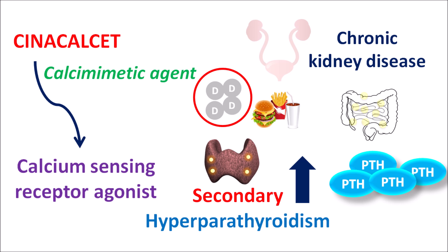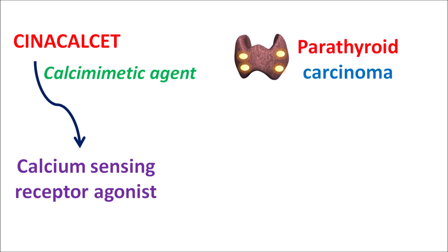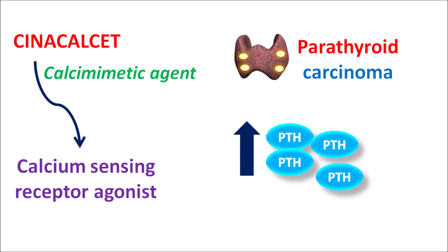In such conditions, the raised levels of parathyroid hormone can produce various systemic complications and should be thoroughly controlled. Cinacalcet can be used to control raised PTH levels. Apart from this indication, Cinacalcet can also be used in conditions like parathyroid carcinoma — a condition where cancerous growth results in raised PTH levels, again leading to systemic complications. Since calcium can control the secretion of PTH from the parathyroid gland, Cinacalcet can be used as a calcimimetic agent which reduces the secretion of PTH.